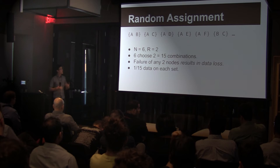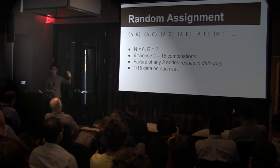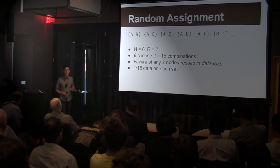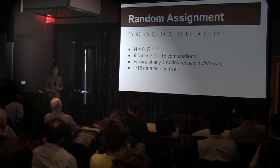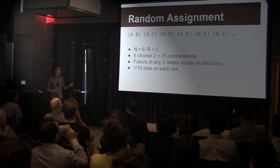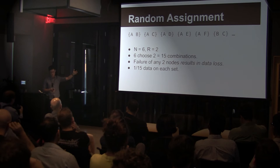The point is that if you throw enough data onto here, you will actually have data on every single possible two-server combination. So if you have a two-server failure, you're guaranteed to lose data. If you have a two-server failure, you're guaranteed to lose data, and one fifteenth of your data will go away, because there are 15 of these sets.